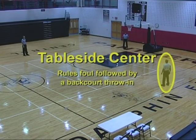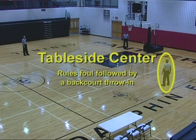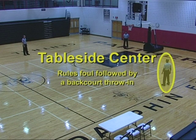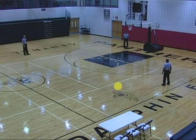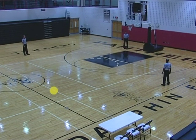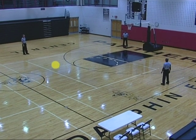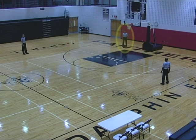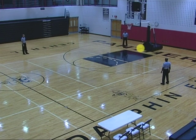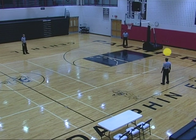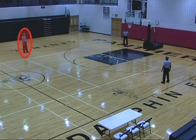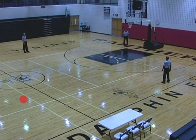Table side center rules foul followed by a backcourt throw-in. Proceeds to the reporting area, reports the foul, and becomes the opposite side center. Opposite side lead becomes table side trail and handles the throw-in in the backcourt. Opposite side trail becomes table side lead.